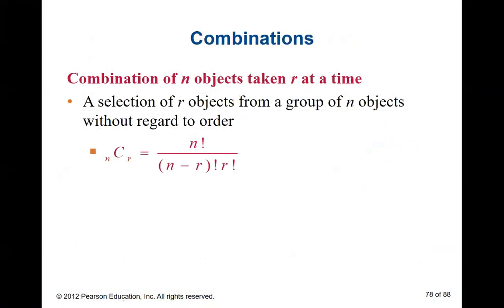What makes something a permutation? Order matters. The other type is a combination — what do you think is different? Order doesn't matter. If you're writing down winning lottery numbers, does the order they appear on the ticket matter, or do you just have to have those numbers? As long as you have the right numbers, they don't care what order they're in. That's a combination.